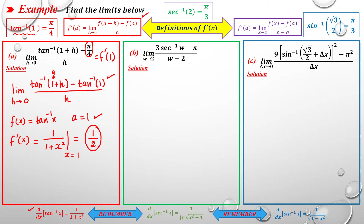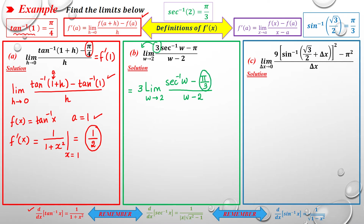For part B, we take 3 as the greatest common factor from the numerator and pull it out of the limit. The limit becomes 3 times the limit of [arcsec(w) - π/3] / (w - 2) as w→2. We can rewrite π/3 as arcsec(2).